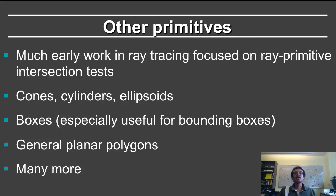So far we've spoken about spheres and triangles. Much of the early work in ray tracing dealt with other primitives. So it focused on a variety of ray primitive intersection tests for things like cones, cylinders, and ellipsoids. Ray box intersection tests were especially studied and optimized. This is useful for bounding boxes. And general planar polygons were considered. Many many other surfaces were considered. You can pick up a ray tracing book and you'll find many ray surface intersection routines.